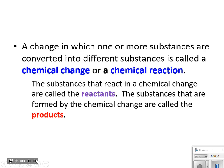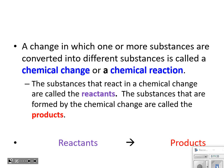The substances that react in a chemical change are called reactants. The substances that are formed are called products. The arrow in a chemical equation is read as 'yield.' So: reactants yield products. The left side of the arrow is the reactants; the right side is the products.